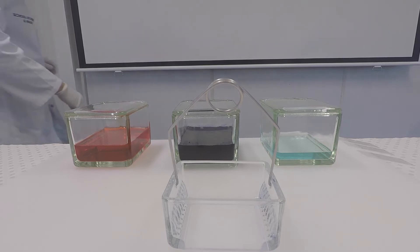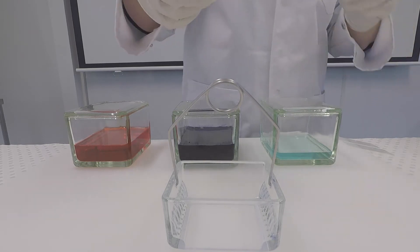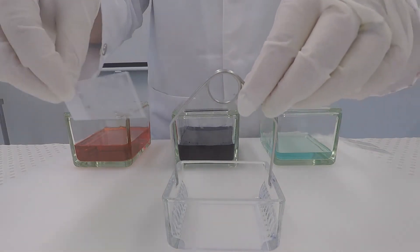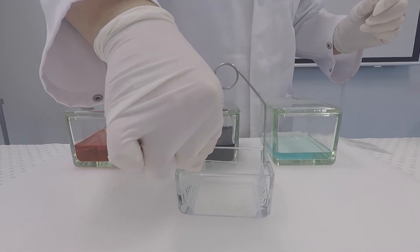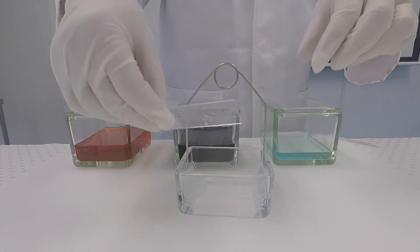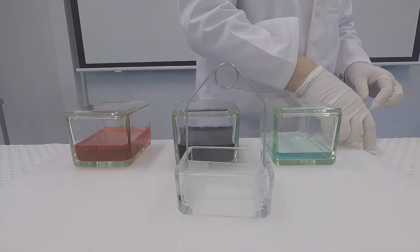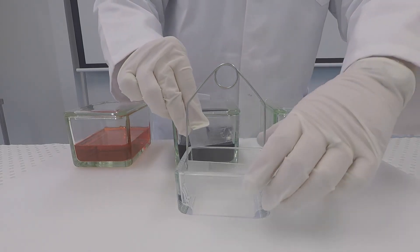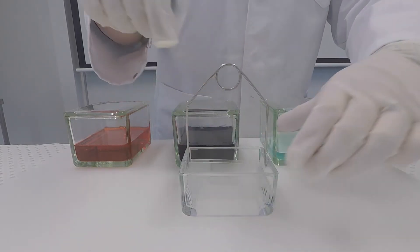We'll first be putting it in the light blue solution, which is a fixative that ensures the cells are sticking to the slide. After that, we'll be putting it in the dark blue stain, which stains the nuclei of the cells, and then the orange solution, which stains the cytoplasm pink.